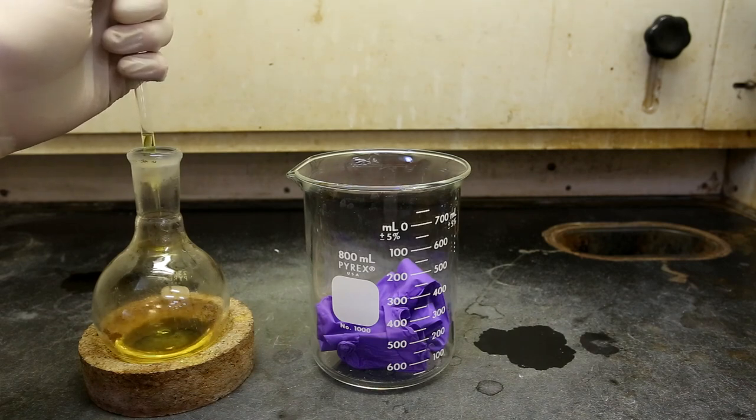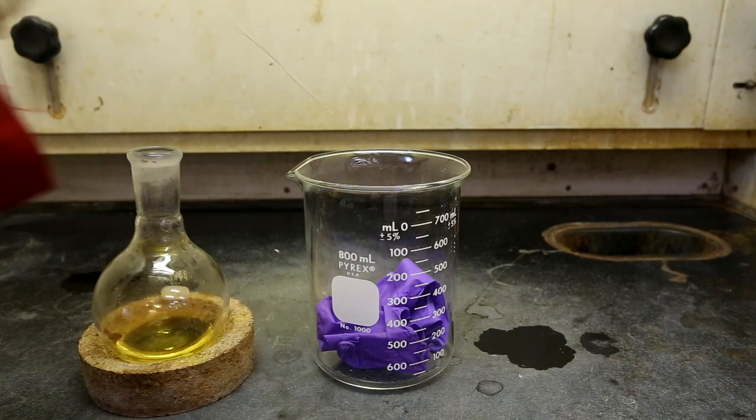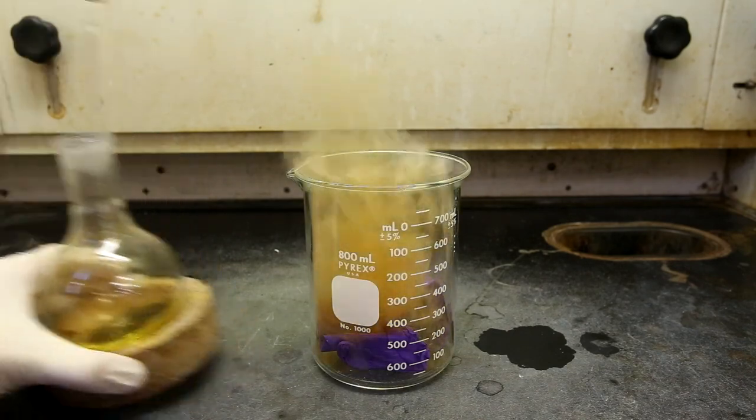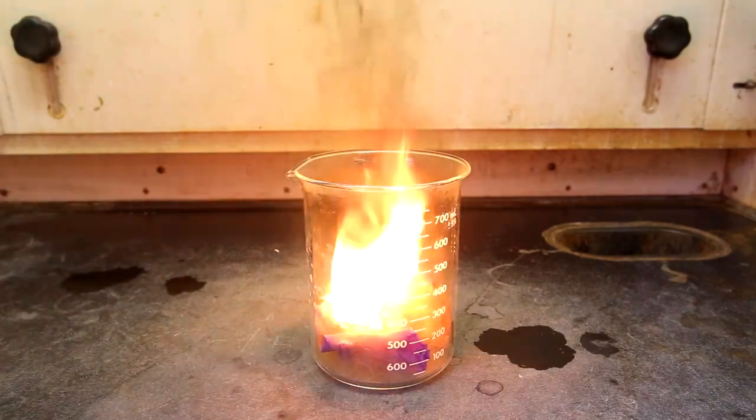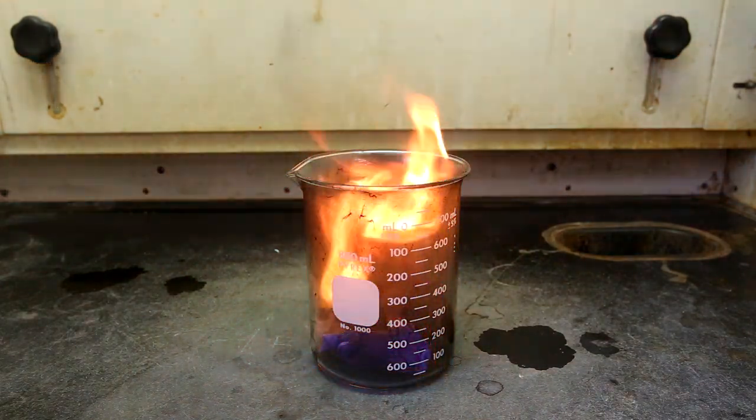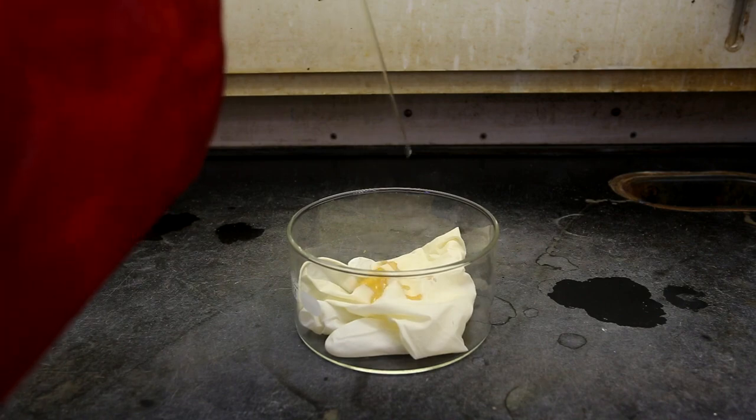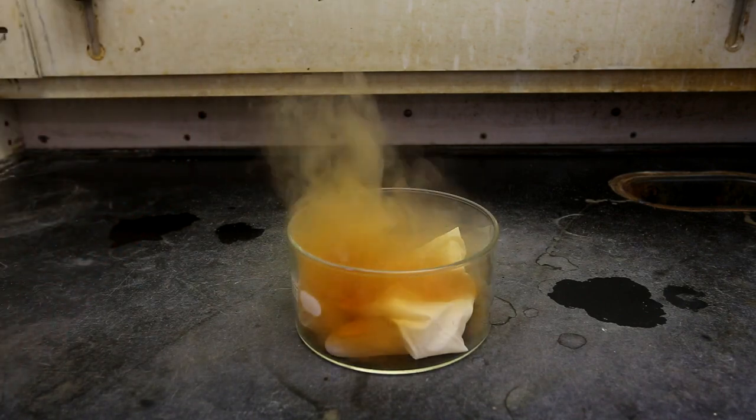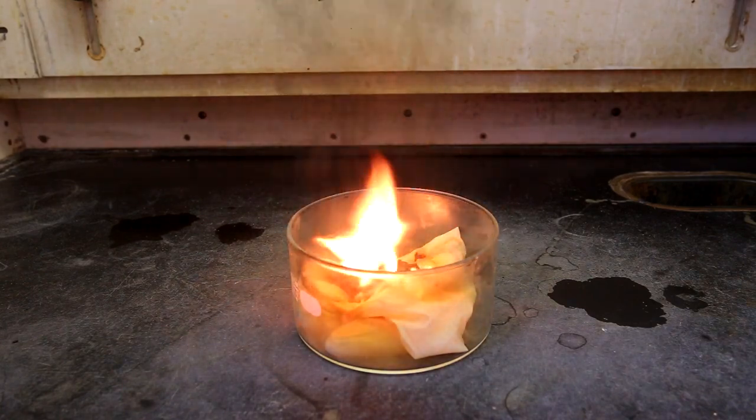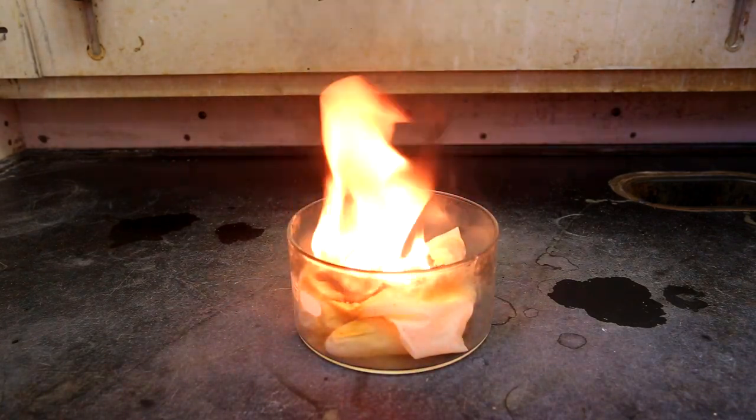Next is a demonstration on what fuming nitric acid does to typical lab gloves. First is about 2ml of fuming nitric acid on nitrile gloves. And surprisingly, the nitrile gloves quickly burst into flames. Adding 2ml to now latex gloves has a similar result. This is a good demonstration to show that lab gloves are not perfect and they are susceptible to chemicals.